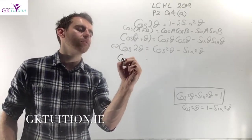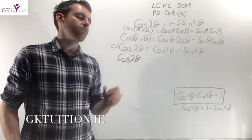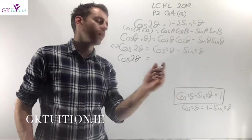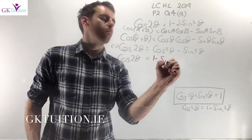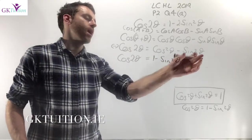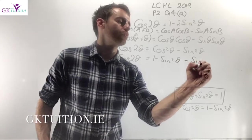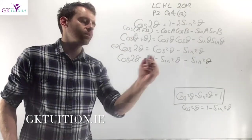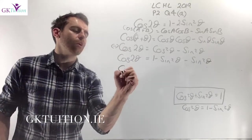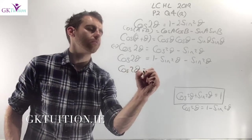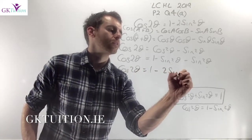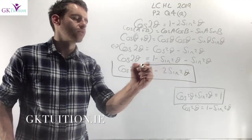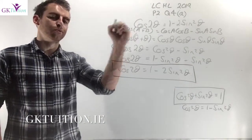My left hand side will stay exactly the same: cos(2theta). My right hand side: instead of cos²(theta) I'm going to substitute in 1 minus sin²(theta), and then I keep my last term which was minus sin²(theta). Now my last two terms on the right hand side are like terms and they add together to give me minus 2sin²(theta). That's the final answer — that's what you were asked to prove at the start.